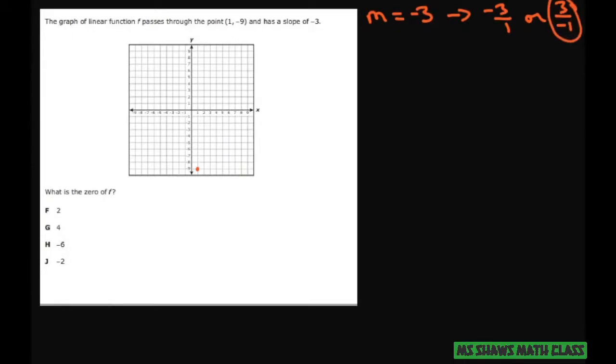So basically for you to graph this, you would go up 3 to the left 1, up 3, 1, 2, 3 to the left 1.